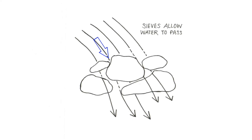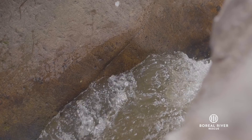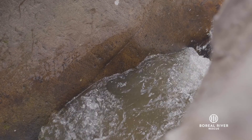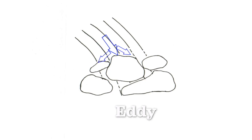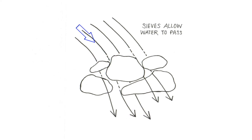Rock sieves, or siphons, occur when boulders pile up in a way that allows the water to pass through the spaces between them — they act like a strainer. A similar feature can also be created when erosion carves a tunnel through bedrock. To identify a sieve, look at the current flowing towards a jumble of rocks and the water immediately downstream. If the current is being deflected and there's an eddy in relatively calm water just downstream, it's likely safe. If there seems to be a lot of water flowing into the rock and then disappearing and coming out on the downstream side, stay away.